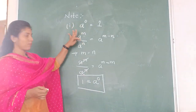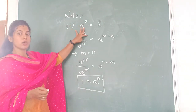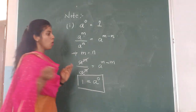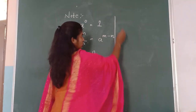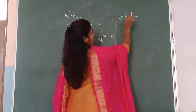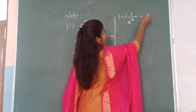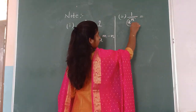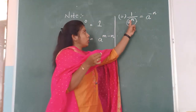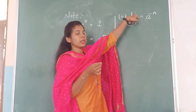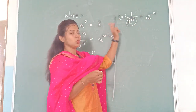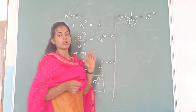When bases are same and powers also become equal, anything to the power of 0 is always equal to 1. The second note: 1 divided by A to the power of N. When we take the denominator to the numerator, it becomes A to the power of minus N. So in the denominator the power carries plus, and when taken to the numerator it becomes negative.